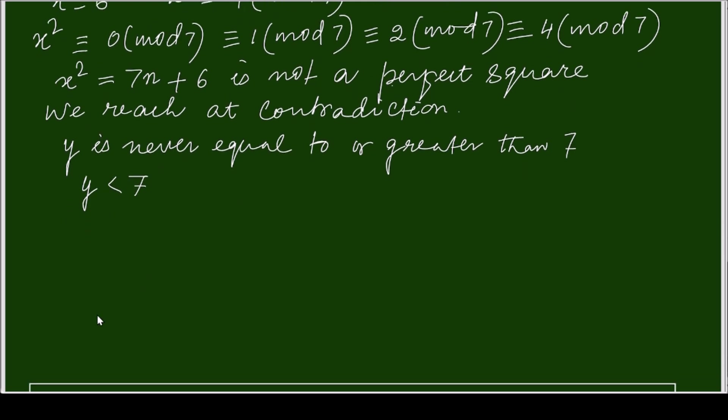That means y is your less than 7. When less than 7 means it is 1, 2, 3, 4, 5, 6. Now x square minus y factorial equals to 2, 0, 0, 1.